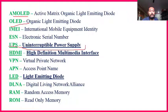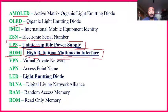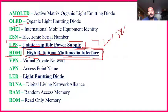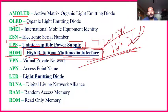UPS — Uninterruptable Power Supply — already discussed. HDMI — High Definition Multimedia Interface — is important. This relates to video quality — when you say your video is 720p, 1080p, 1600 by something, 360p — all these resolution specifications come under HDMI. That is High Definition Multimedia Interface.